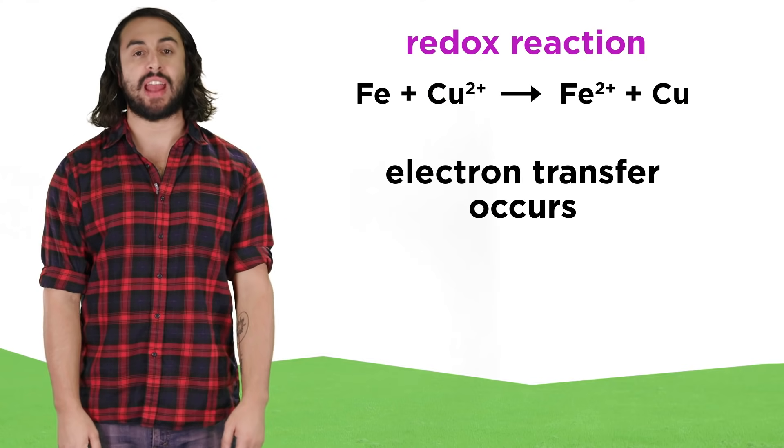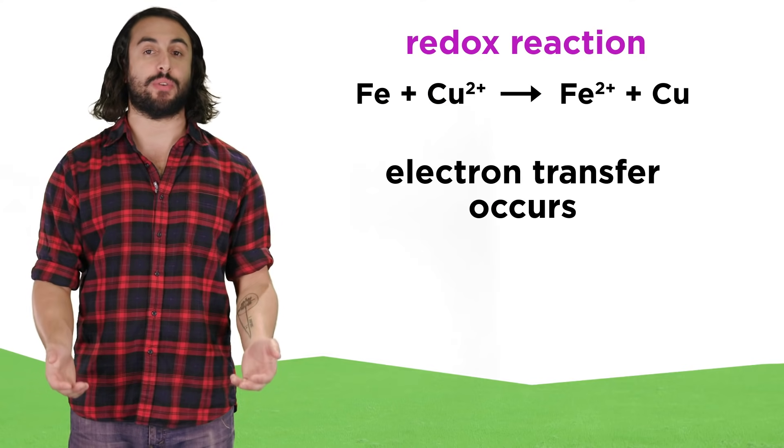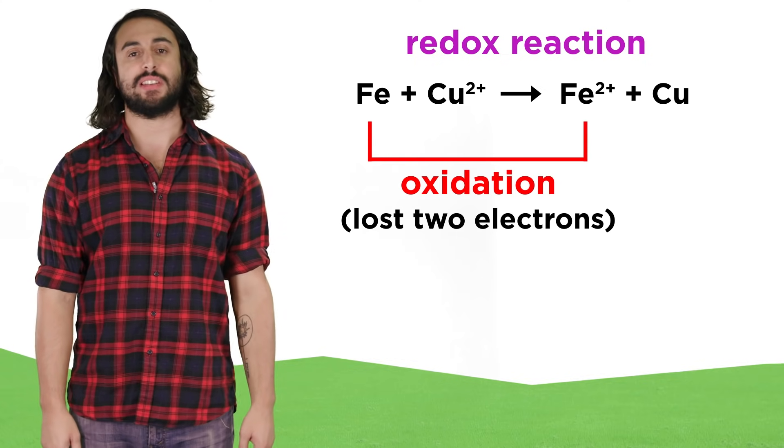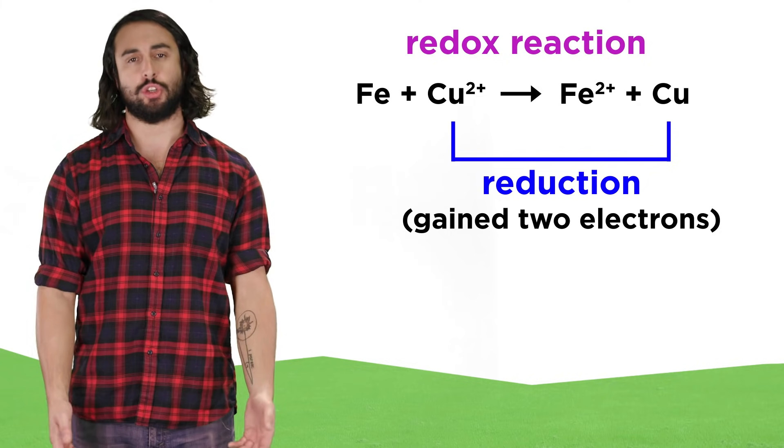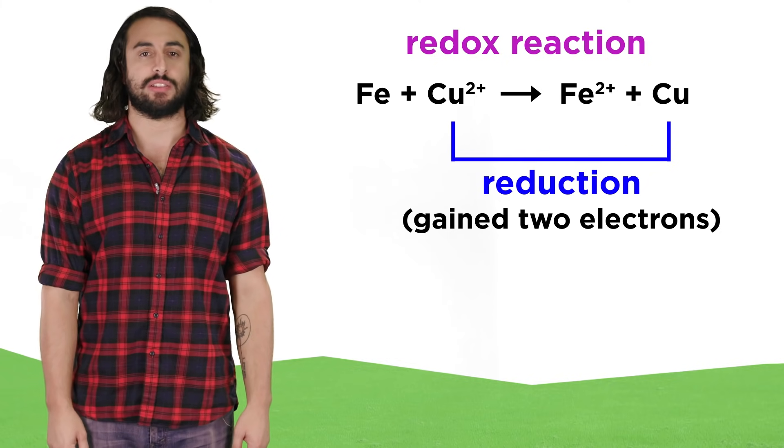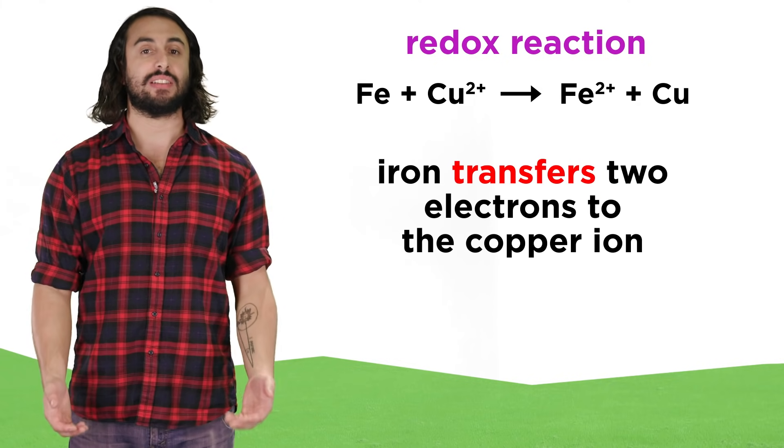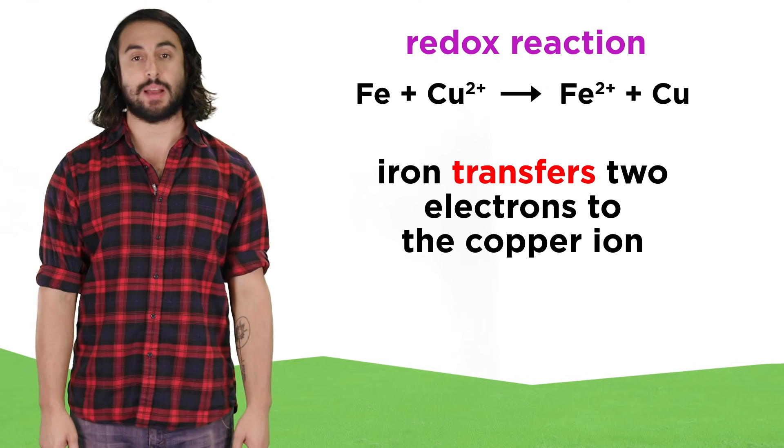We know that redox reactions are reactions in which electron transfer occurs. One substance is oxidized, which means it loses electrons, and another substance is reduced, meaning it gains electrons, which will occur when these electrons are transferred from one substance to another.